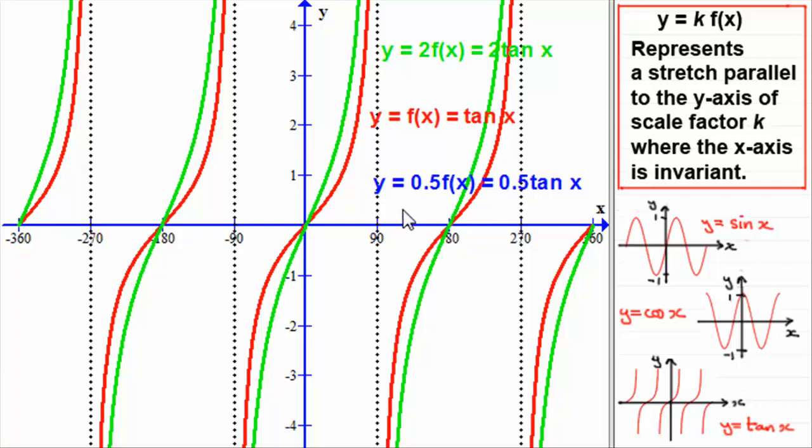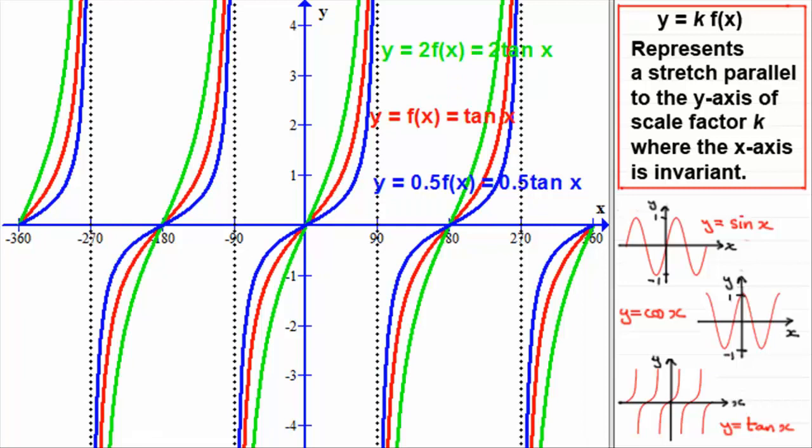What about the graph y equals a half of f of x, half tan x, 0.5 tan x? Our values now are all going to be halved. Our y values are going to be halved, so you should have a graph looking something like this. It's still got the same shape as the original graph. Hopefully you've got some idea now how to sketch trigonometric graphs when we're using this particular transformation, y equals k times f of x where k is a positive constant. That brings us to the end of this tutorial.